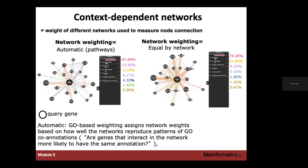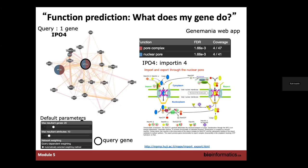Here's an example of GeneMANIA being used for a single gene query. The gene here is IPO4, and we want to know what this gene does. You give GeneMANIA your one gene and by default it will return 20 genes related to your gene — you can change that threshold, but 20 is the default. The query gene appears in the center of the network with a black border around it.